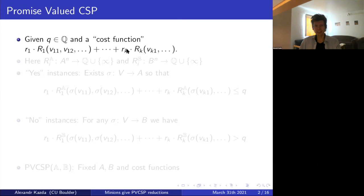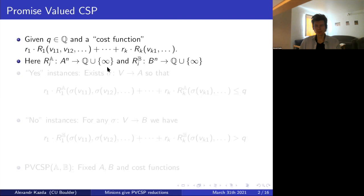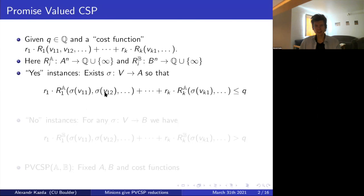This is a promise problem, so each of these R's can stand for one of two things. For each symbol R, I've got two functions that go from either the nth power of some set A or the nth power of some set B to rational numbers, or also allowing the infinite value, which basically means that some tuple of inputs is not feasible. I've got yes instances and no instances — it's a promise problem, so sometimes an instance is neither yes nor no.